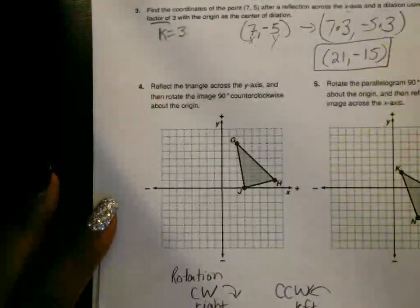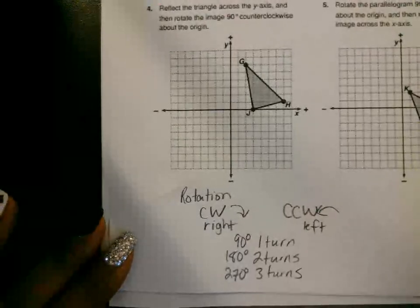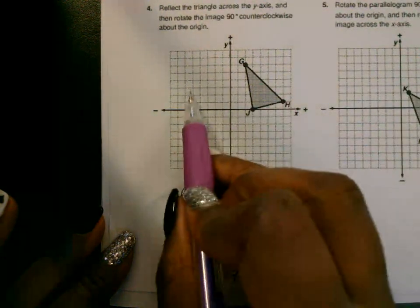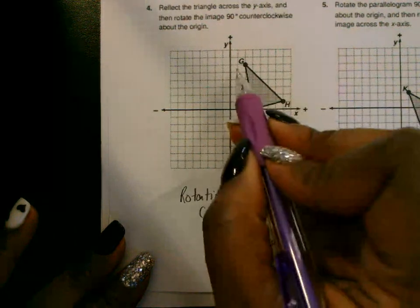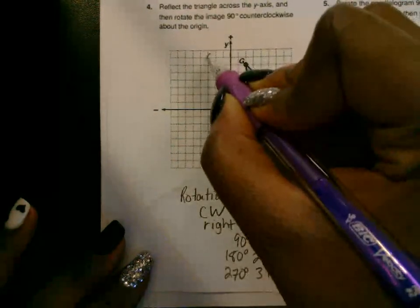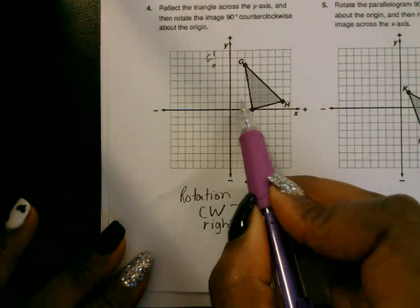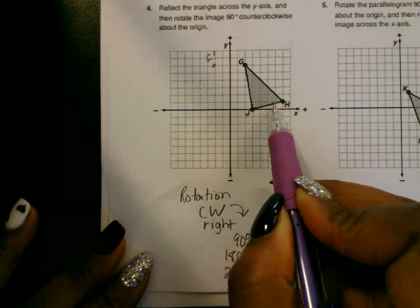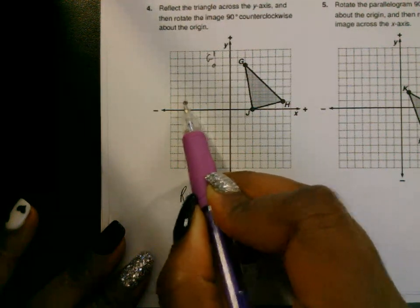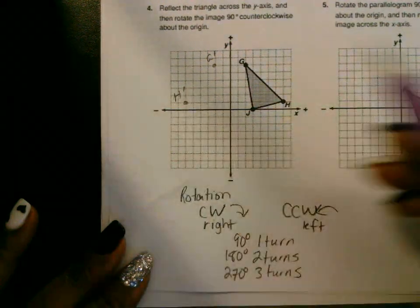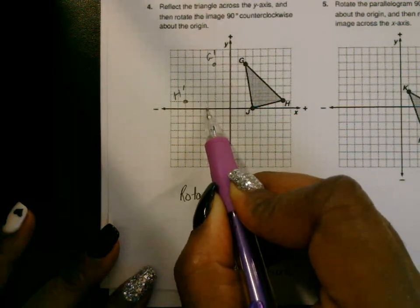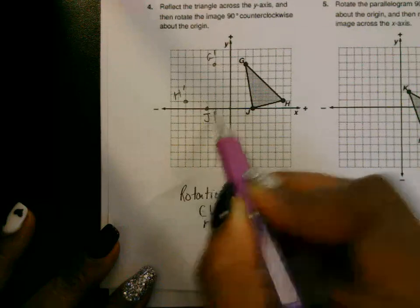All right, let's look at this one — reflect. We're going to reflect it first across the Y-axis right here, so we're going to flip it over here. G is two away from the Y-axis, so it's going to be two away when you flip it — this is G prime. H is six away from the line of reflection, so it's six on the other side — this is H prime. J is three away from the line of reflection, so it's three on this side. Connect.